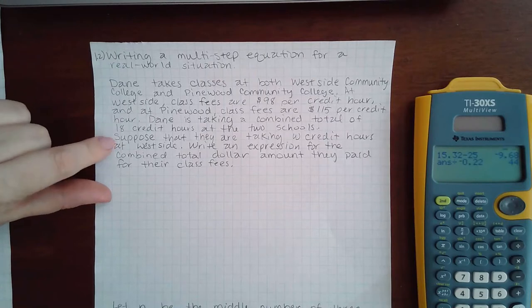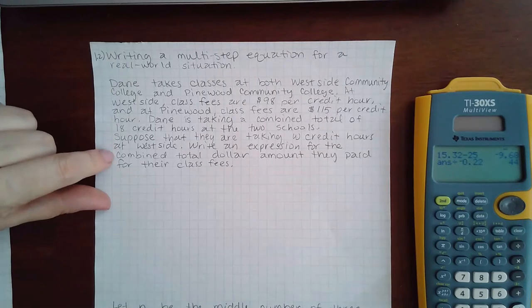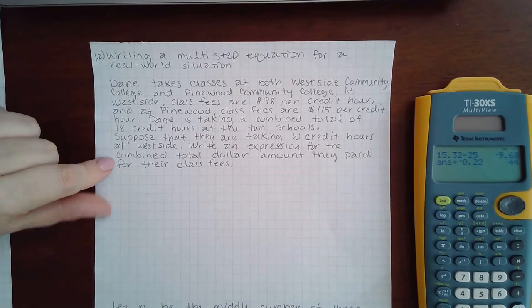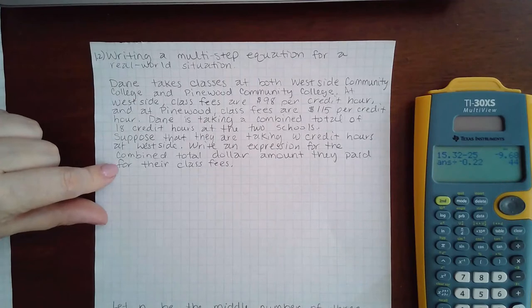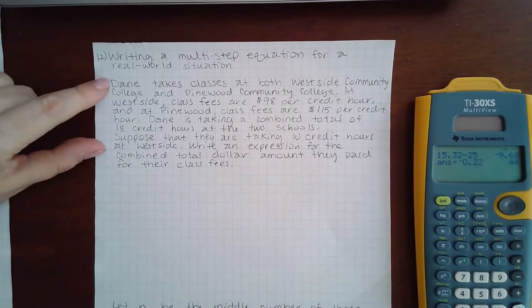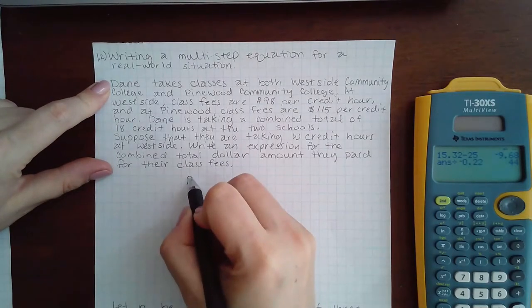Suppose that they are taking W credit hours at Westside. Write an expression for the combined total dollar amount they paid for their class fees. So for this one, you've got two things: the class fees for Westside Community College plus the class fees for Pinewood.